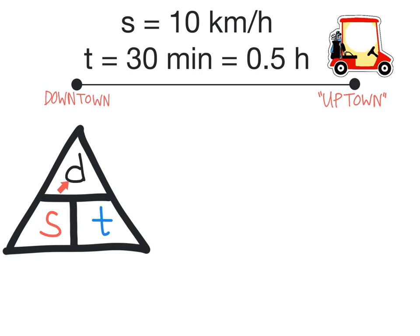We know the variable we are looking for is distance, so that means distance is going to equal speed times time as our formula. Distance equals speed times time.